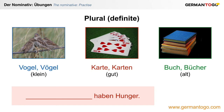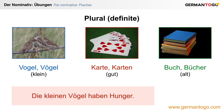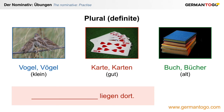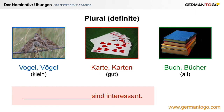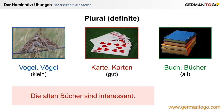How do you say in a sentence: the small birds are hungry? Die kleinen Vögel haben Hunger. And the good cards are lying there — Die guten Karten liegen dort. And the old books are interesting — Die alten Bücher sind interessant.